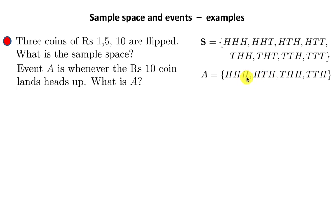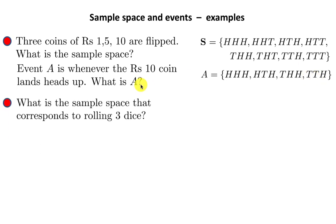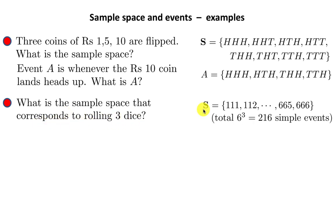In each case there's a head on the ten-rupee coin, but then it could be heads-heads-heads, heads-heads-tails, tails-heads-tails, tails-heads-tails — various combinations. Now let's take another example: what is the sample space corresponding to rolling three dice? The sample space contains too many elements to write down easily. The total number of elements, or the order of the set, is 6 × 6 × 6, which amounts to 216 simple events.